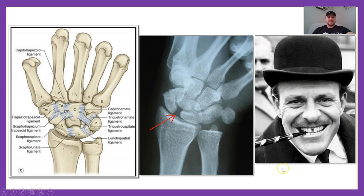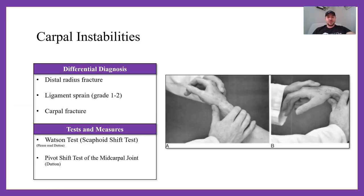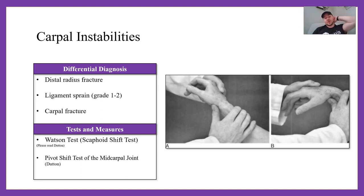For differential diagnosis: distal radius fracture due to mechanism and location of pain, ligament sprain that's grade one or two rather than a complete grade three rupture, or a carpal fracture such as a scaphoid or lunate fracture. For tests and measures, you'll perform the Watson test — also known as the scaphoid shift test — and the pivot shift test of the midcarpal joints. Please read Dutton for more info on both of these.